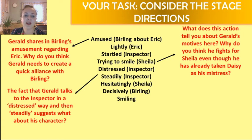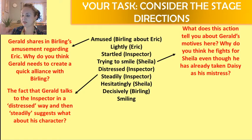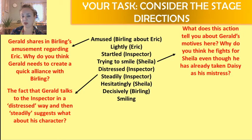These two stage directions: Gerald talks to the inspector in a distressed way, and then he speaks steadily. What do these two things suggest about his character? I think he's distressed when he realises it's not just some shop girl that died — it was his Daisy Renton. He's distressed at the realisation that it is Daisy. And then when he gathers himself and comes back to being the upper middle class chap who knows what's what, he becomes very steady in his speech again — because men probably shouldn't be seen to be too emotional, that's how women behave. Did he let his guard down when he became distressed? Was that the real Gerald? And then he pulls himself together and speaks steadily — is that him assuming his role again as an upper class hero of the hour?